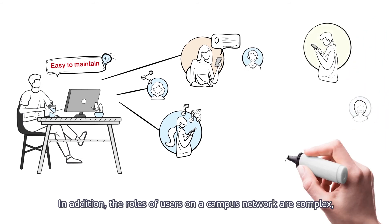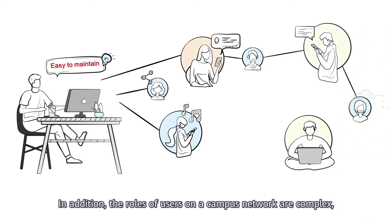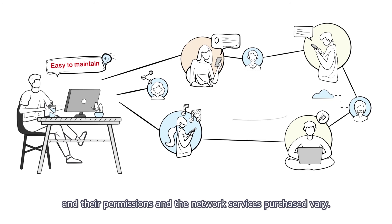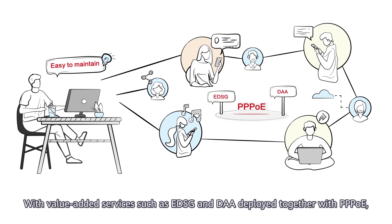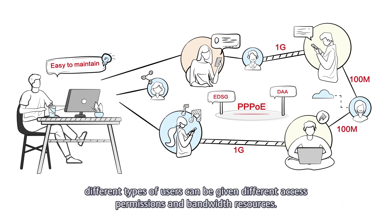In addition, the roles of users on a campus network are complex, and their permissions and the network services purchased vary. With value-added services such as EDSG and DAA deployed together with PPPoE, different types of users can be given different access permissions and bandwidth resources.